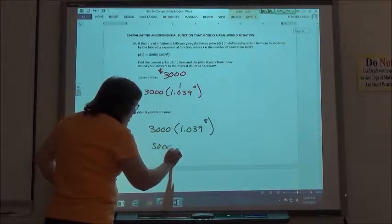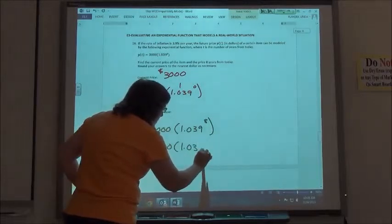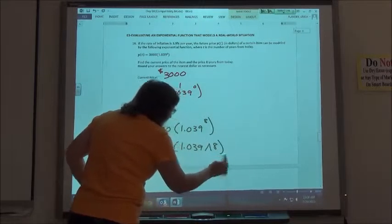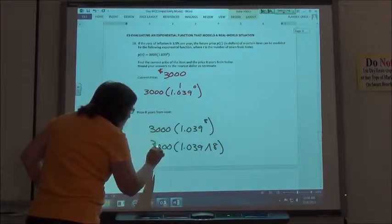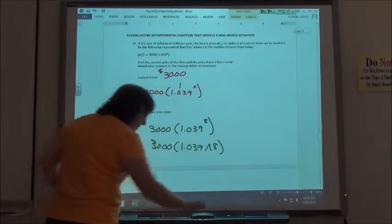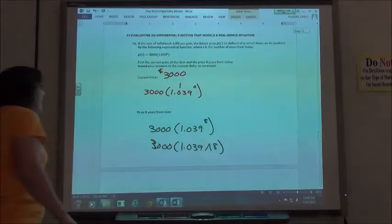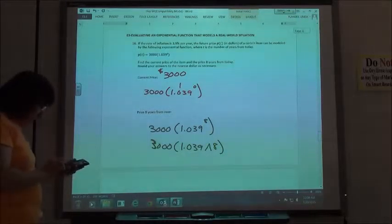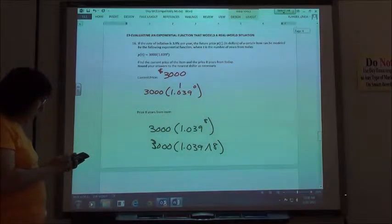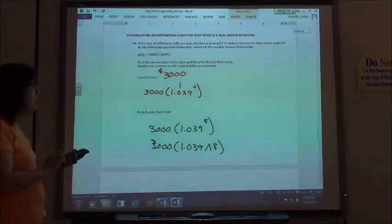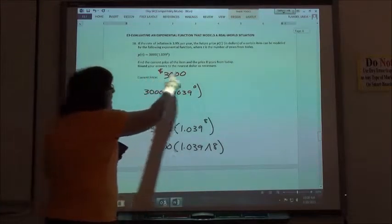If I want to calculate the price 8 years from now, I'm going to do my $3,000, 1 plus 0.039 to the 8th power. So on my calculator, I'm going to use the carat key, and I'm just going to put it in like that.